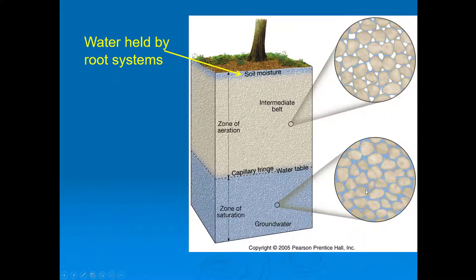The upper limit of the zone of aeration is called the belt of soil moisture, which is where water is held by root systems. How deep the belt of soil moisture is depends on the environment. This diagram will be on your third exam, and you'll be matching up these rock layers to their names.